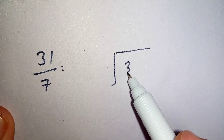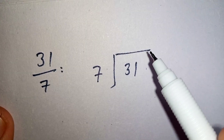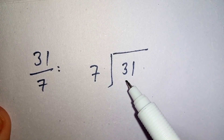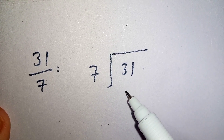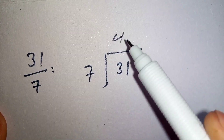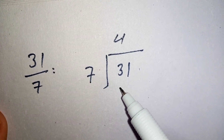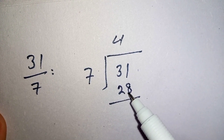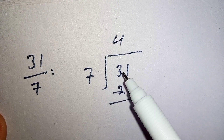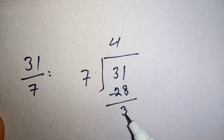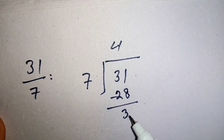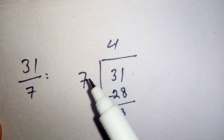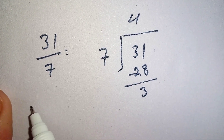So 31 divided by 7 — we multiply 7 with such a number whose multiplication is either equal to 31 or less than 31. We multiply 7 with 4, whose multiplication is equal to 28, which is less than 31. So we subtract 28 from 31, which equals 3. The remainder is 3. Now we will divide 3 by 7 and add with 4.